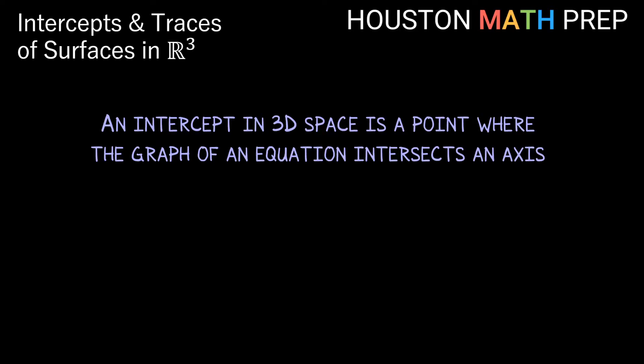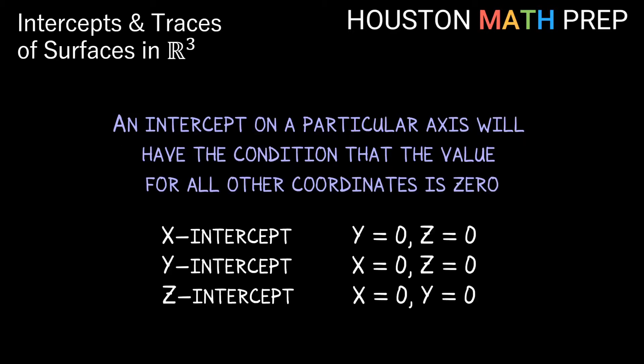Hey everyone, Houston Math Prep here. In this video, we'll explain the ideas of intercepts and traces for surfaces in 3D space. First let's look at intercepts. In 3D space, an intercept is simply a point where the graph of an equation intersects an axis. Something that's true for intercepts, no matter the number of dimensions, is that the value for all other coordinates is zero at that intercept.